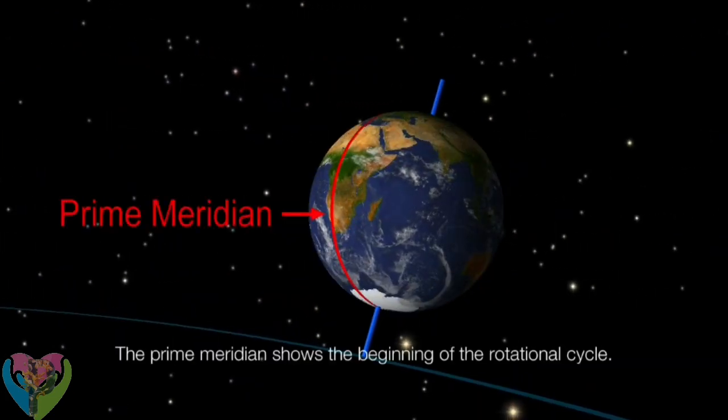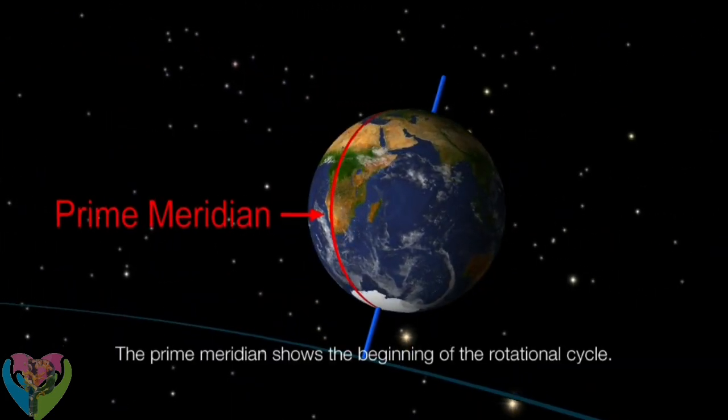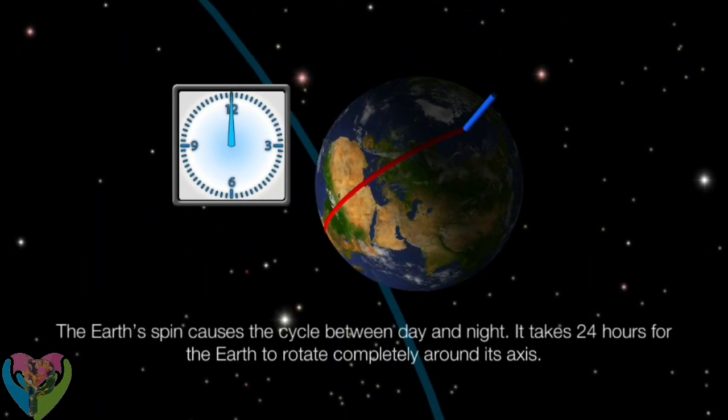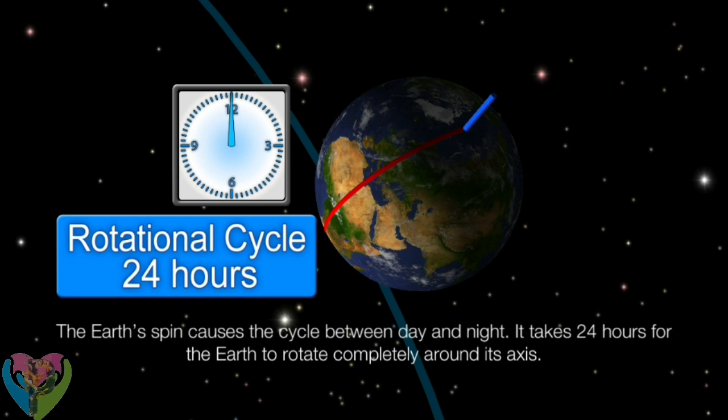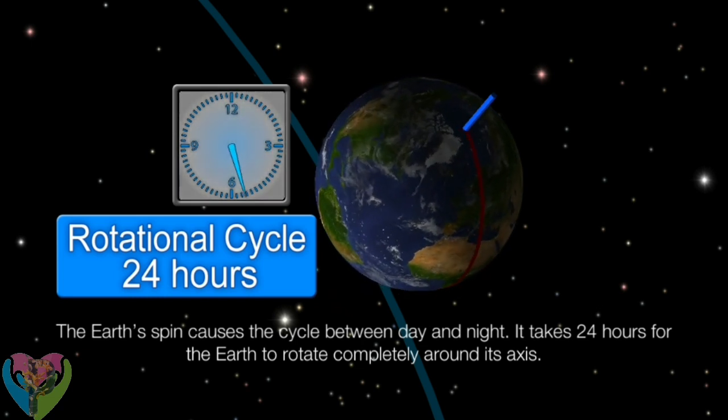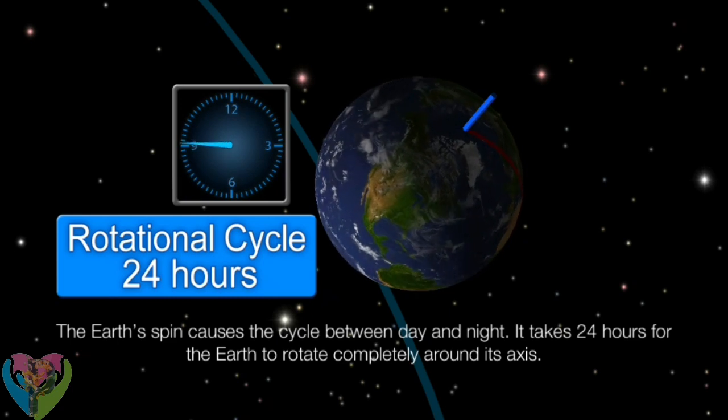Day changes shows the beginning of the rotational cycle. The Earth's spin causes the cycle between day and night. It takes 24 hours for the Earth to rotate completely around its axis.